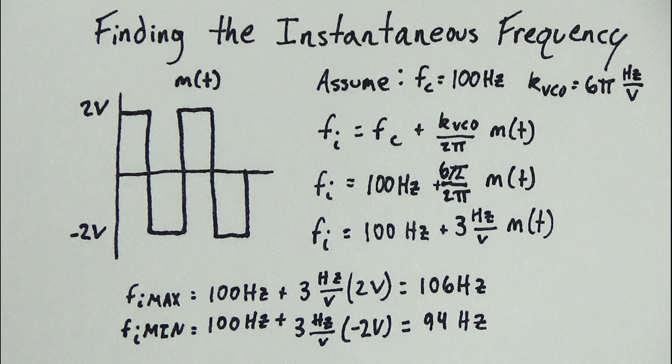To wrap the VCO audio applications part 2 video up, I'll leave you with an example of how you can calculate the instantaneous minimum and maximum frequencies for a given waveform. I'd recommend finding the minimum and maximum frequency swing by using a message signal of a square wave. You will essentially have two frequencies that you'll be outputting. One for the minimum and one for the maximum.